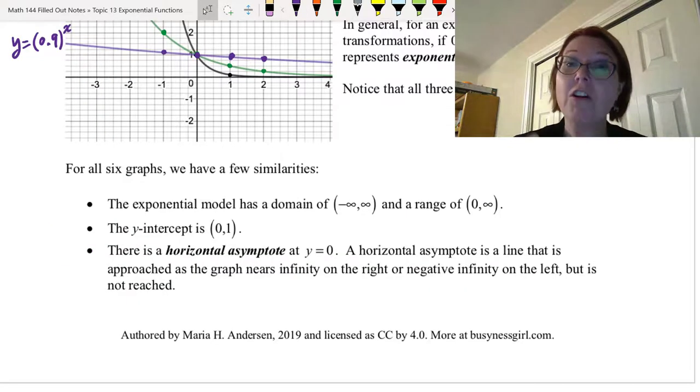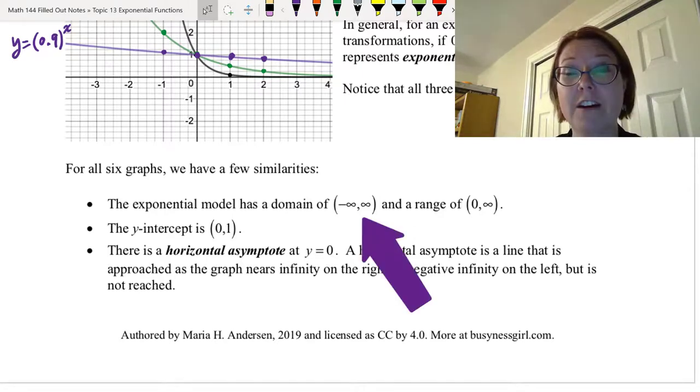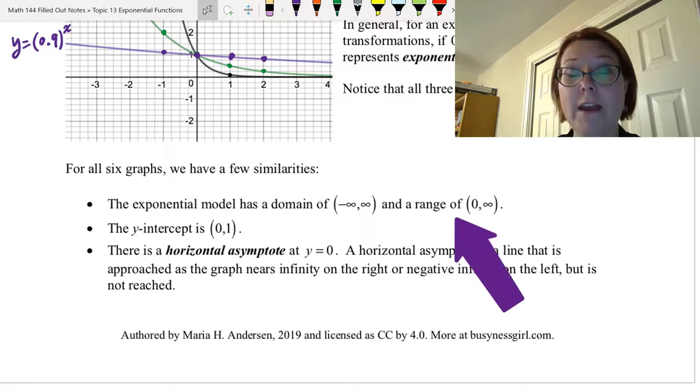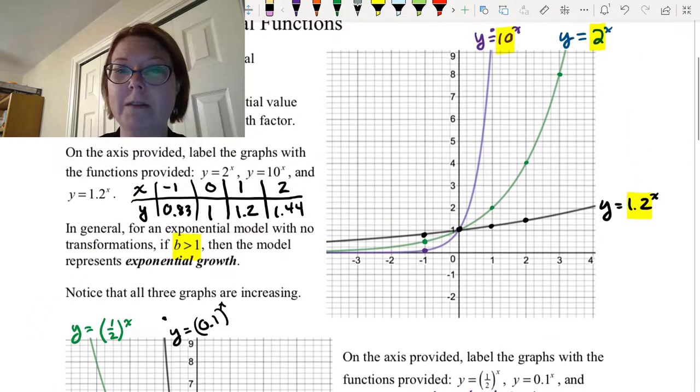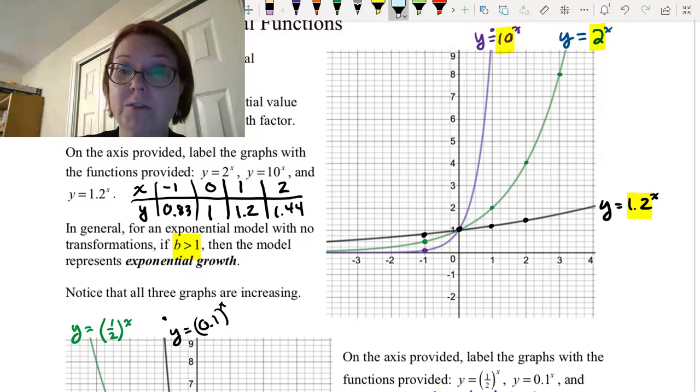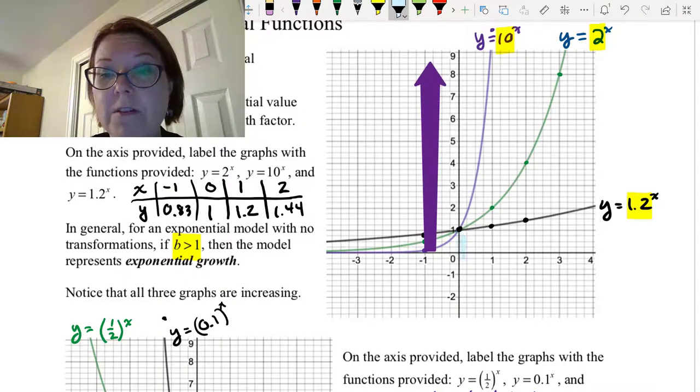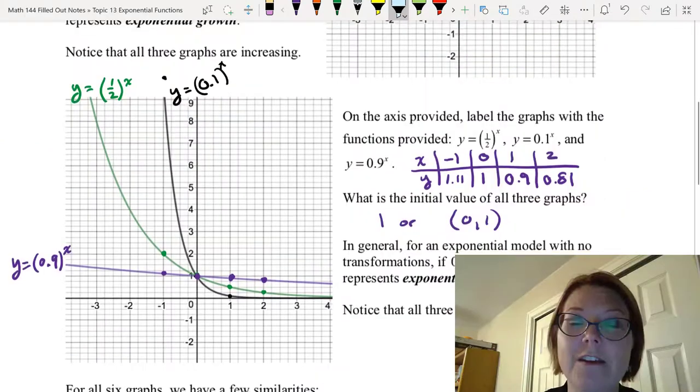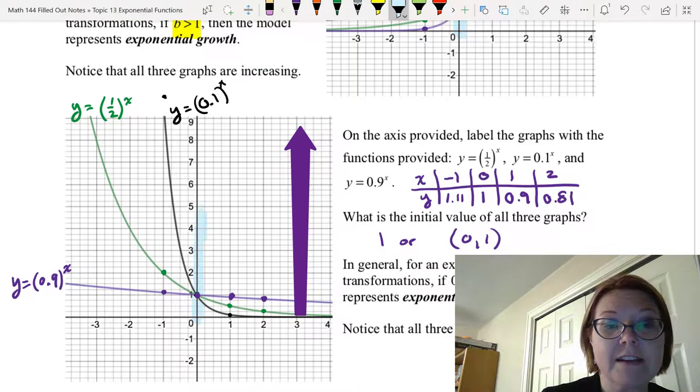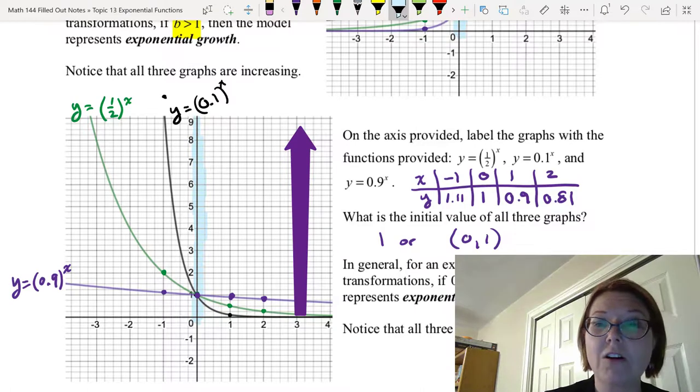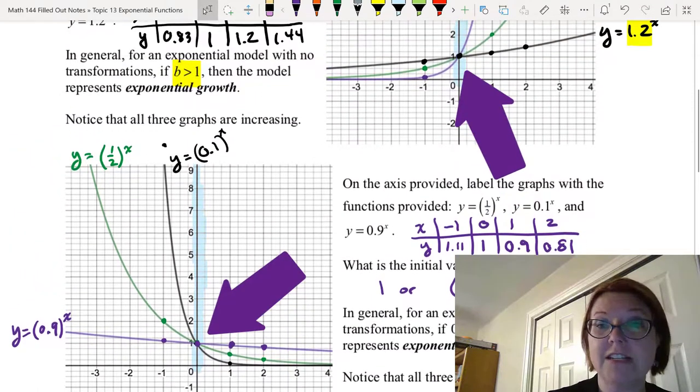Now, for the six functions that we graphed, there are a few other similarities. The exponential models, as long as they haven't been transformed, they have a domain of negative infinity to infinity and a range of 0 to infinity. Let's just go back and look at these graphs for a second to make sure you believe the range part. So for the first three increasing graphs we drew, we can see that all three of these curves are above the x-axis, and so the range would be the values that are bigger than 0. For the next set of three graphs, the decay curves, again, the graphs are all above the x-axis, and so we can see that the range for those is also 0 to infinity, not including the 0. The y-intercept for all of our graphs was actually 0, 1.